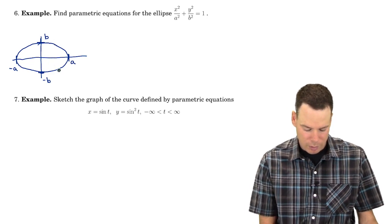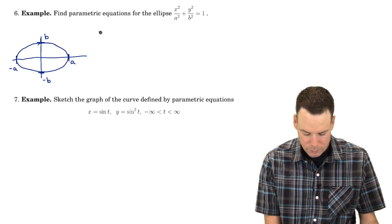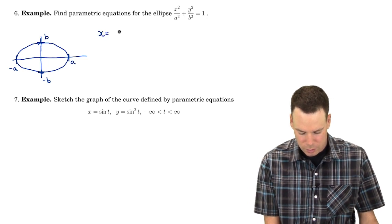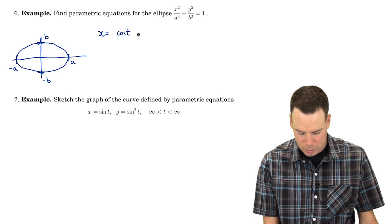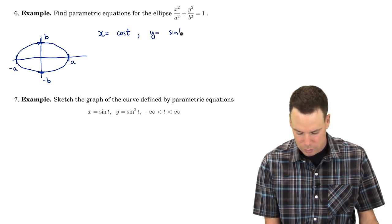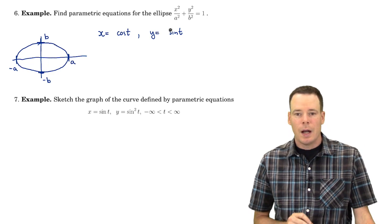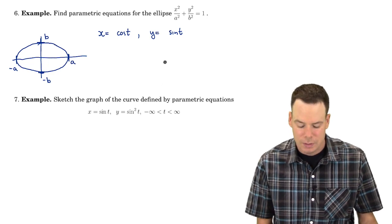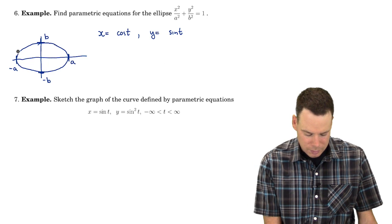Now, I want to come up with a parametrization of this. Let's just jot down x equals cos of t, y equals sine of t as a start. I know this isn't going to give me the ellipse because this is going to give me a circle.